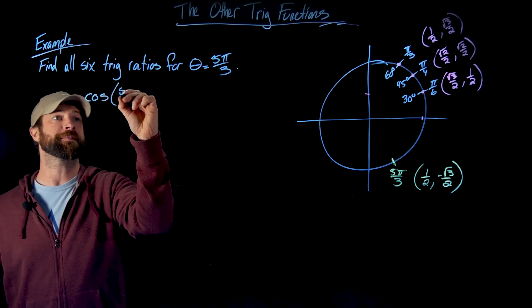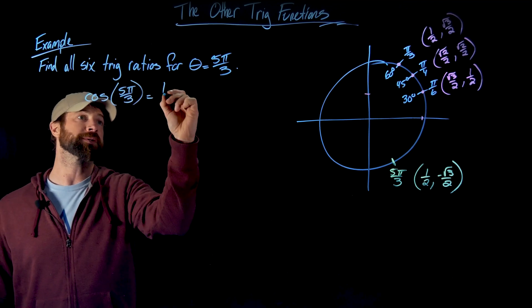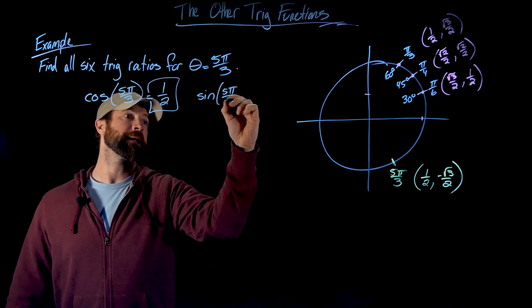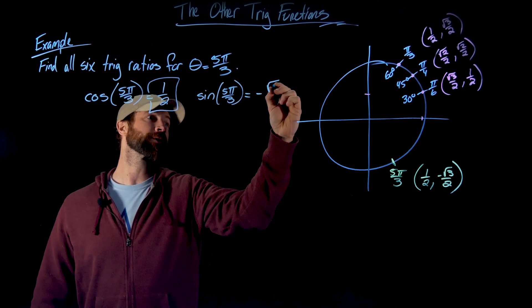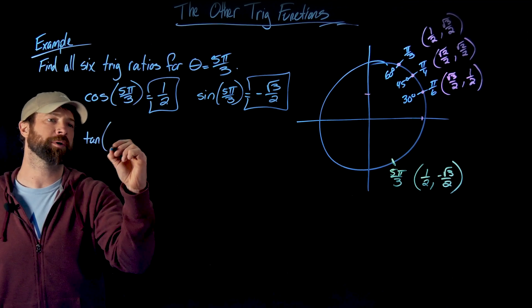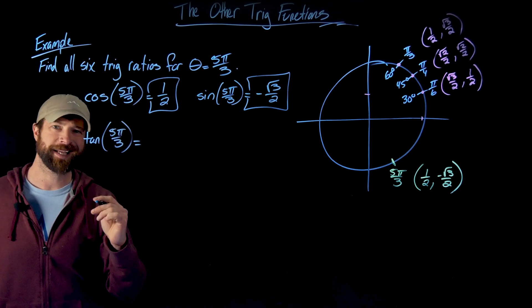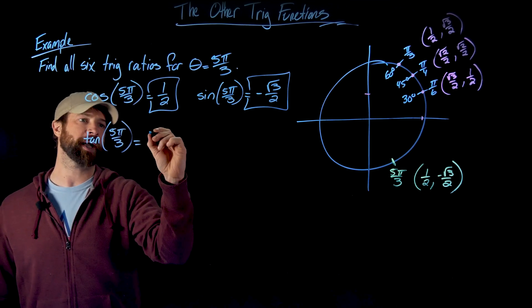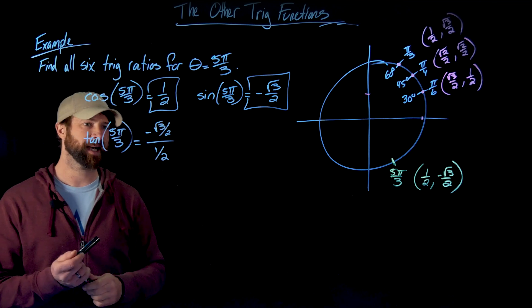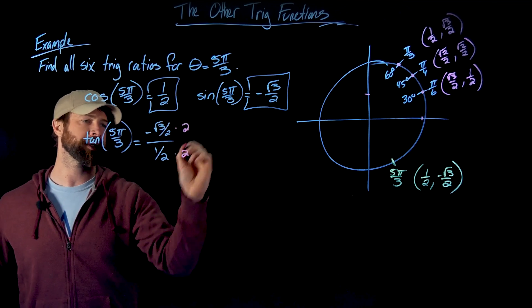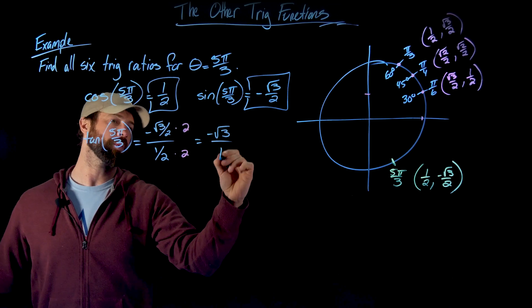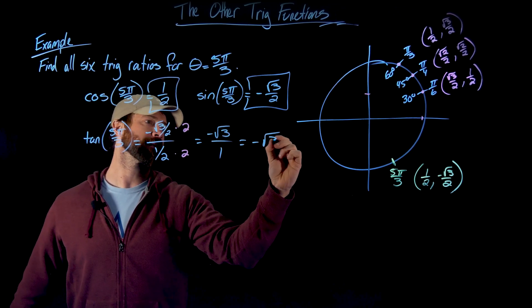The cosine of 5π/3 is the x value, which is 1/2. The sine of 5π/3 is the y value, which is −√3/2. For the tangent, we take y divided by x: (−√3/2) ÷ (1/2). Multiplying numerator and denominator by 2 simplifies this complex fraction to −√3/1, or simply −√3.